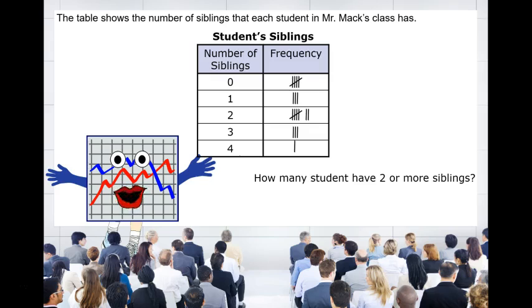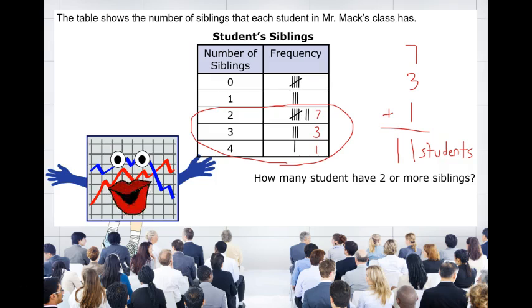First, we want to identify how many people have two or more siblings. Those would be these values. We have 7, 3, and 1. If we add them together, we get 11. So our answer is 11 students.